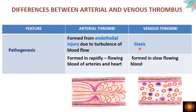For venous thrombi, the main cause is stasis. With stasis, there is no laminar blood flow — instead there is stagnation of blood and cells. These cells come in contact with endothelial cells; WBCs damage endothelial cells through reactive oxygen species. Similarly, platelets coming in contact with endothelial cells get activated, degranulate, and release ADP, which activates other platelets, leading to platelet aggregation and thrombus formation.